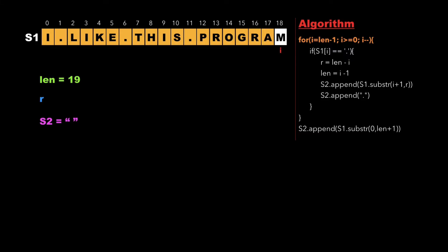At each traversal we check whether s1[i] is equal to dot. Since 'm' is not equal to dot, we decrement i. Again 'a' is not equal to dot, so we keep decrementing i until we reach a character which is equal to dot.